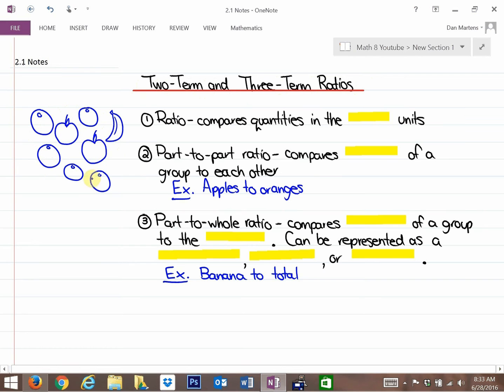So what you're going to want to start with is drawing this picture here of five oranges, two apples, and one banana. That's going to help us answer a few questions in this particular section.